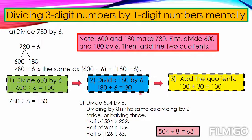So, if we divide directly, 780 divided by 6, the answer is 130. For the second example, to further elaborate our topic about dividing three-digit numbers by one-digit numbers, we have 504 divided by 8.